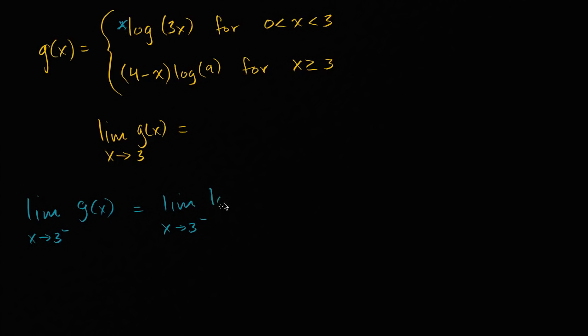So we're going to be operating right over there. That is what g of x is when we are less than three. So log of three x. And since this function right over here is defined and continuous over the interval we care about, it's defined and continuous for all x's greater than zero, well, we can just substitute three in here to see what it would be approaching.